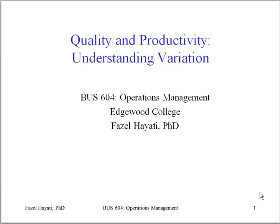In Module 4, we focused on systems approach to quality and productivity and how to establish quality and productivity as a business strategy. In Module 5, we focused on understanding variation.